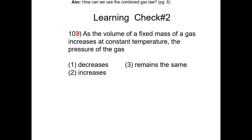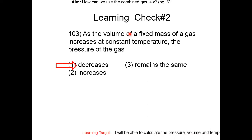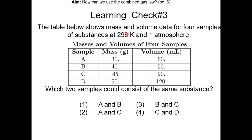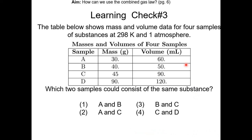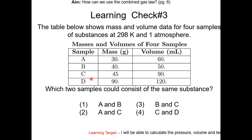Learning check: as the volume of a fixed mass of gas increases at constant temperature, the pressure of the gas will do what? This is a pressure-volume relationship — Boyle's law — so the answer is choice 1; it's an inverse relationship. Next: the table below shows mass and volume data for four samples at 298 Kelvin and 1 atmosphere. Which two samples could consist of the same substance? Since mass relates to moles, and moles and volume have a direct relationship, you're looking for the same mass-to-volume ratio — that's sample A and sample C, so the answer is choice 2.